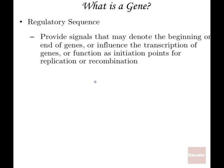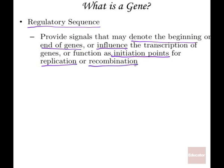Genes can also include regulatory sequences — parts of the DNA that regulate the transcription of other genes. These sequences provide signals that denote the beginning or end of the transcription process, or function as a place where transcription is begun, where replication occurs, or where recombination occurs. Broadly speaking, their underlying function is to regulate transcription in some way.